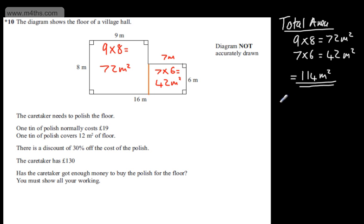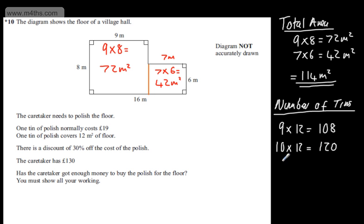Let's go ahead and look at the number of tins we need. So we're told a tin of polish here is 19 pounds and it covers 12 square metres. So now let's look at the number of tins. We could go ahead and divide 114 by 12. That's going to get a bit messy. I'm going to say now that 9 times by 12 is going to be equal to 108. We can say that 10 times by 12 is going to be equal to 120. Therefore required or needs 10 tins.